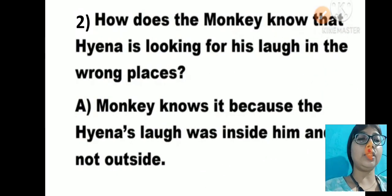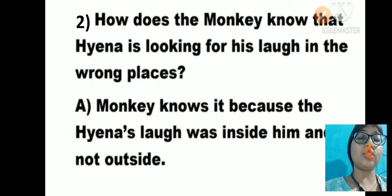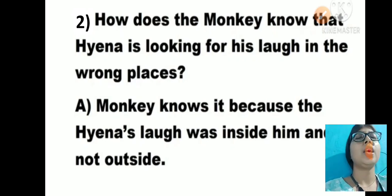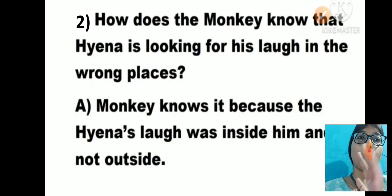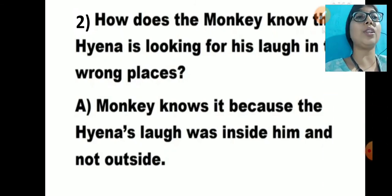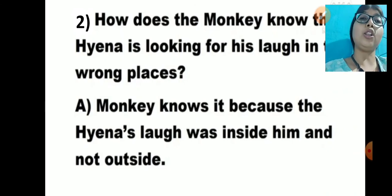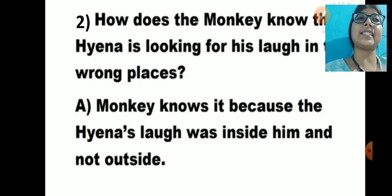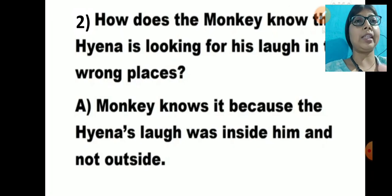Question number 2: How does the monkey know that Haina is looking for his laugh in the wrong places — in the jungle, inside the water, on the tree, around the treetops? Monkey knows it because Haina's laugh was inside him and not outside. That is why monkey asked Haina how he lost his laugh. So monkey knows Haina was searching in the wrong places.